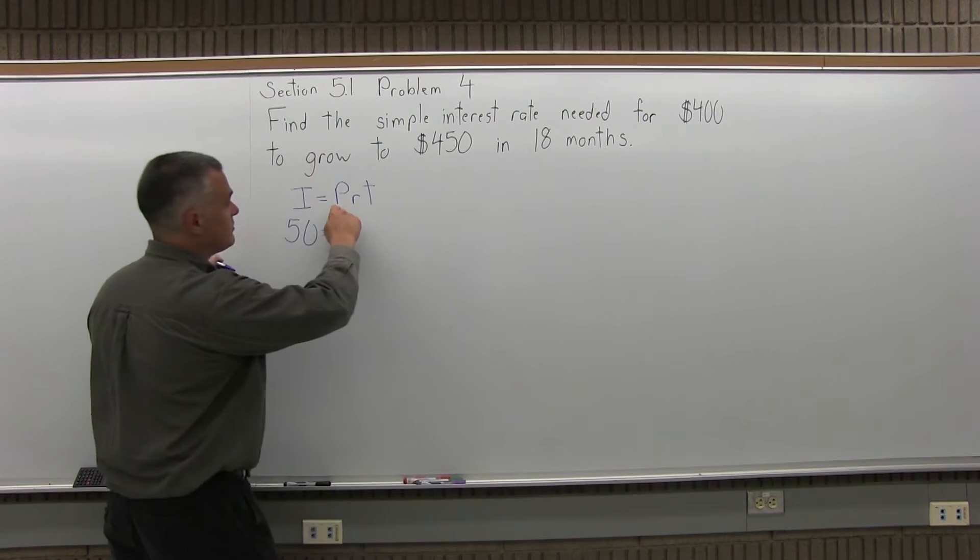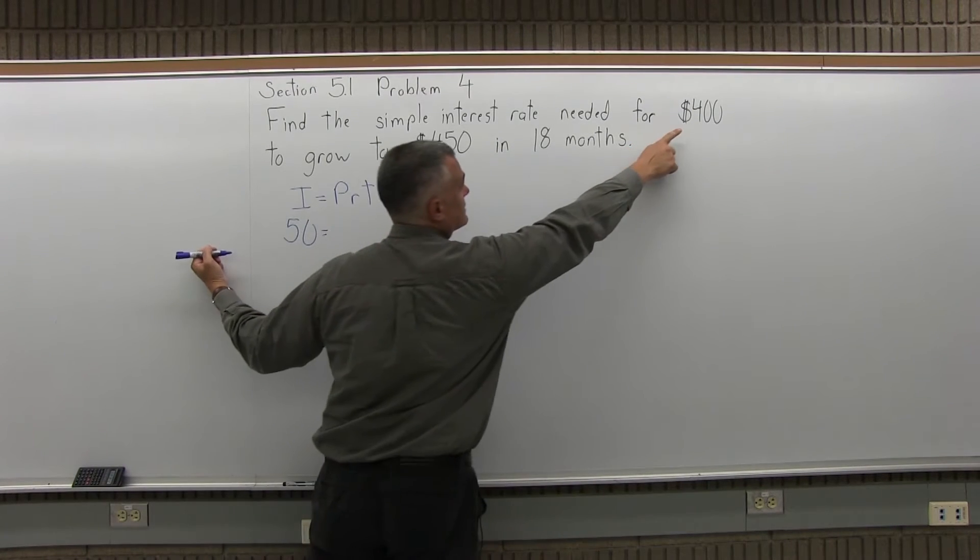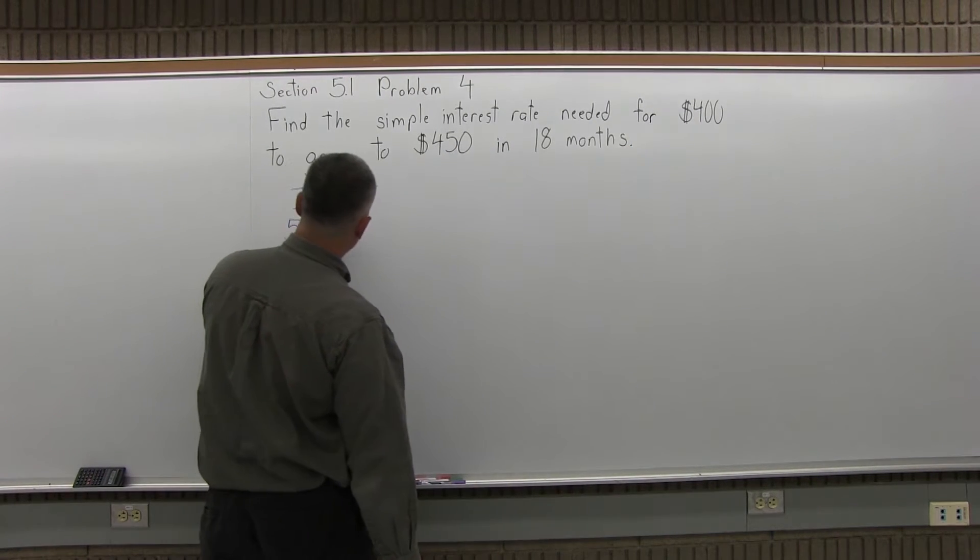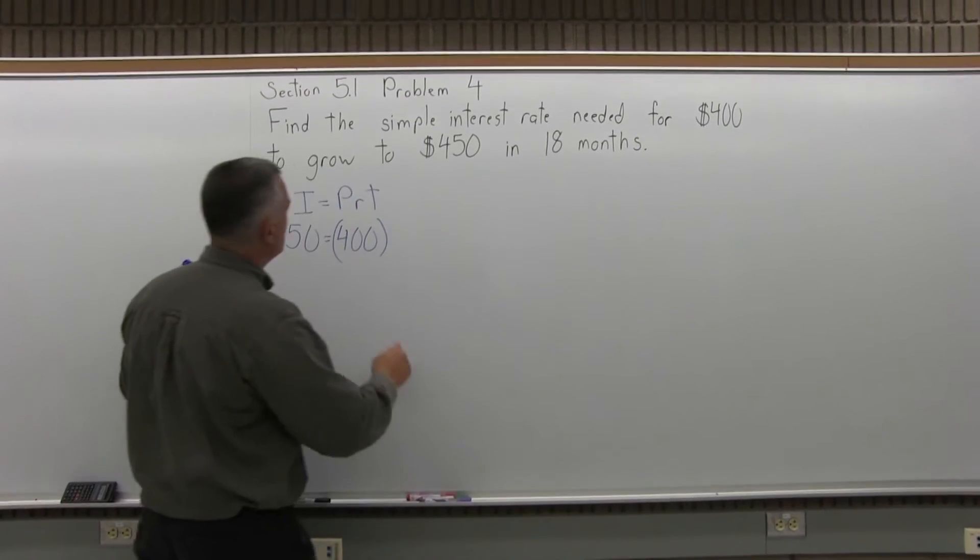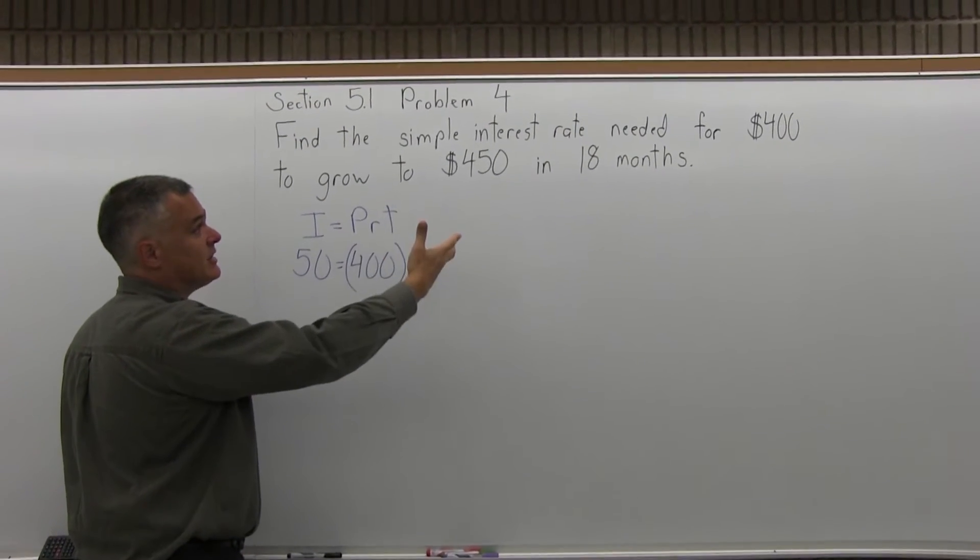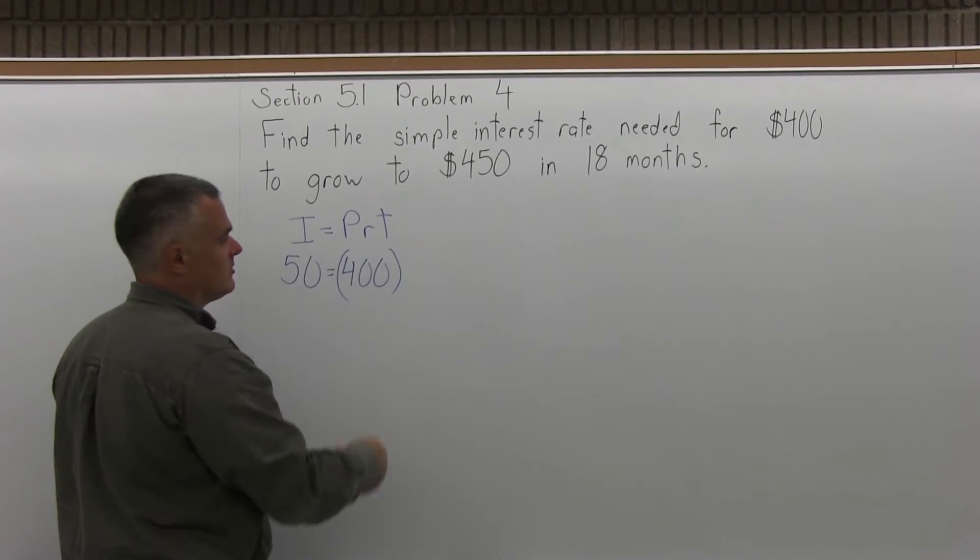I equals P, the principal or initial amount, that's the $400, that's how much you would have to put in, times R, the rate as a decimal. Now that's the unknown, so I'm going to leave that as a variable.